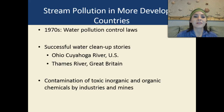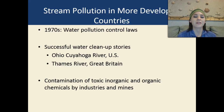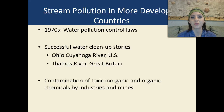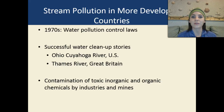In the 1970s, water pollution control laws were established, and there were many successful water cleanup stories, such as the Ohio Cuyahoga River in the United States and the Thames River of Great Britain. Contamination by toxic, inorganic, and organic chemicals from industries and mines had caused these rivers to be extremely polluted. But people took initiative and started cleaning up the rivers, coming up with different laws and ways of removing pollutants.